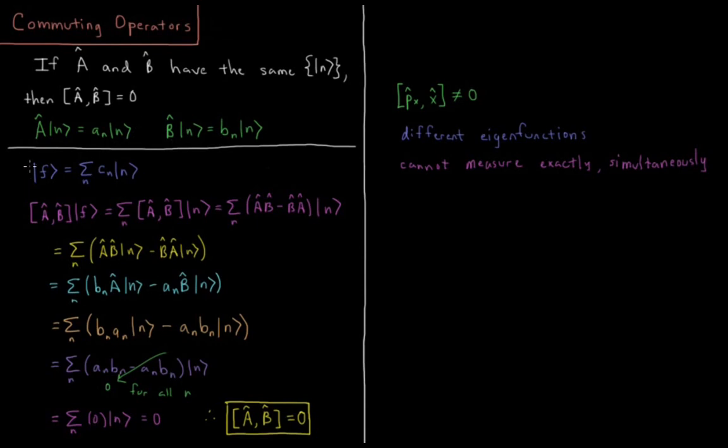So if we have some function F, which we represent as a linear combination or a superposition of these different eigenfunctions, a sum over all N of CN times N, this Dirac ket vector N representing some eigenfunction of A and B.